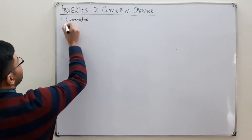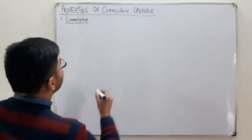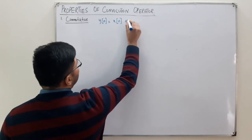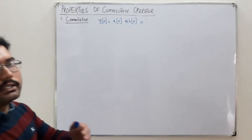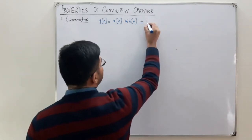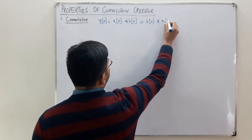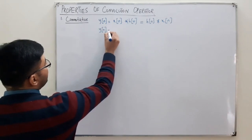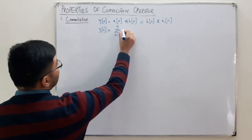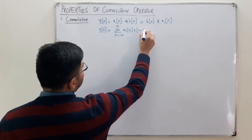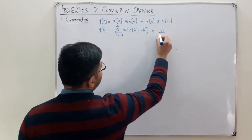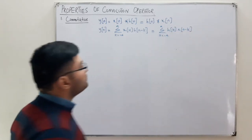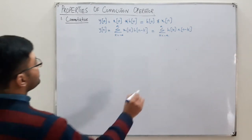The convolution operator is commutative. What does this mean? We know that y[n] equals x[n] convolved with h[n]. The commutative property means you can change the order of the operation, which means h[n] convolved with x[n] has the same output. Mathematically, y[n] equals the sum from k = -∞ to +∞ of x[k]·h[n−k], and this is also equal to the sum of h[k]·x[n−k].